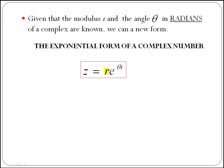Where r is the modulus, theta is the angle, and then we have i, which is the square root of minus 1, and then e, which is an irrational number like pi, and is roughly 2.71.